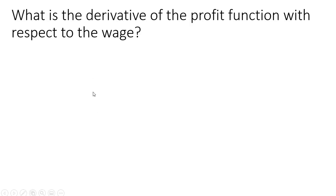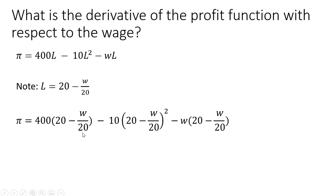Our next step is to take the derivative of the profit function with respect to the wage. So here again is our profit function and note here our factor demand. L equals 20 minus W divided by 20. So we're going to make a substitution in our profit function where we have L. We're going to plug in 20 minus W divided by 20. Making that substitution.